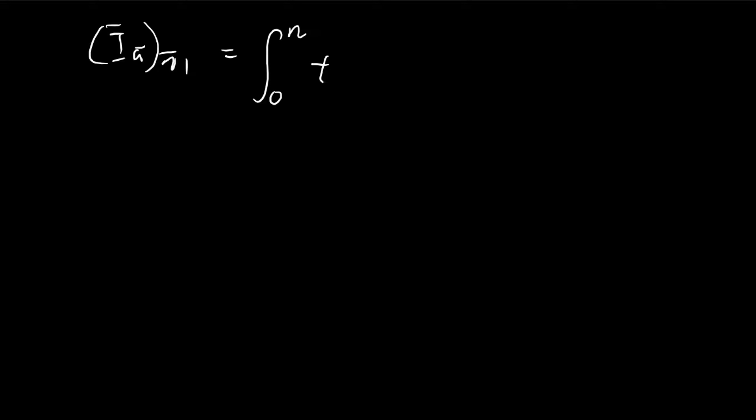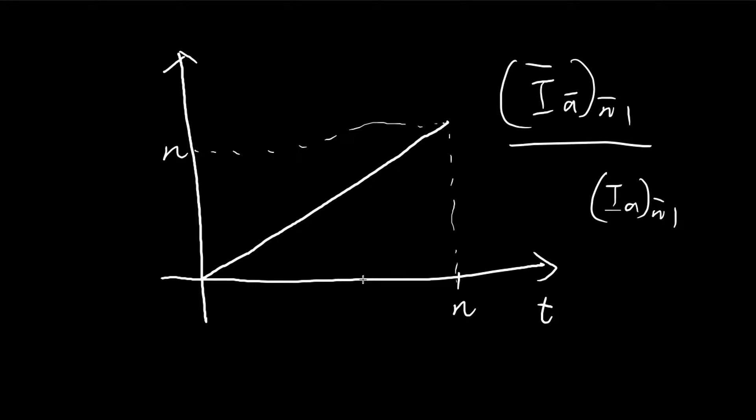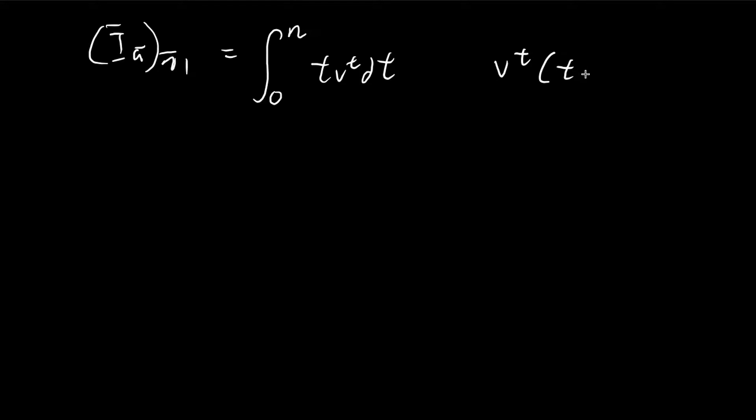So the formula is given by this expression. So you can think of this as v of t is giving you the present value. So you have time t, and then you bring it back to time 0. And then you bring in an amount of t times dt back to time 0. So this is the instantaneous amount you're receiving at time t. And then notice that it keeps on increasing because t is a variable.